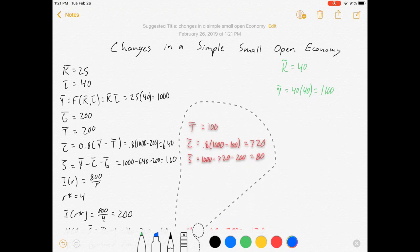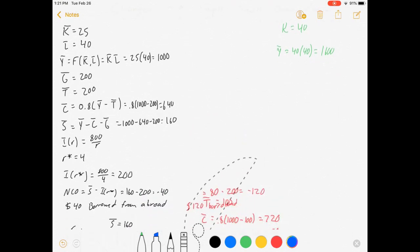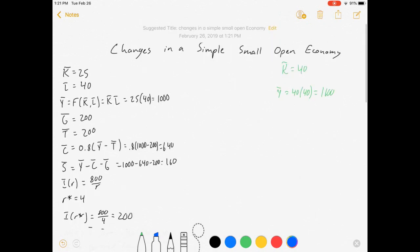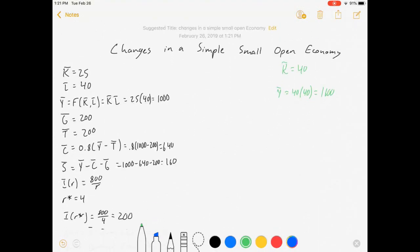We can ignore the red stuff for now. So Y changed, G did not, T did not, C did. C equals 0.8 times 1600 minus 200 equals 1120.